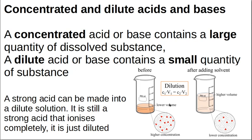Keep it clear in your head: what is concentrated, what is dilute, what is strong, what is weak. You can take a strong acid and make it into a dilute solution, and it doesn't look like a strong acid because it's so dilute — but it's still a strong acid. It ionizes completely, because that is what defines the strength of the acid: how much it ionizes.